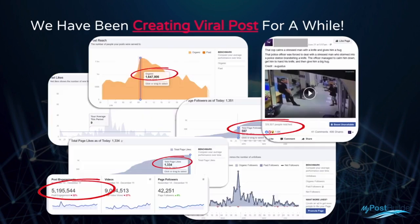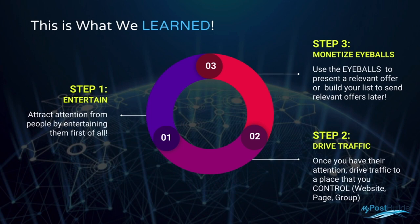People are no longer looking for premium content but content that pulls their attention in this crowded online world. We've been creating viral posts for a while — this first slide shows 1.6 million organic post reach, 1,600 likes, 1,300 total page likes, and 5 million post engagement. Here's what we've learned: step one, you've got to entertain; step two, drive traffic to a place you control; step three, monetize those eyeballs by presenting a relevant offer or building your list.